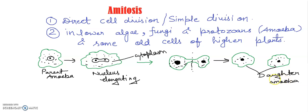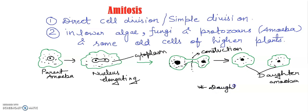So what happens during amitosis: the nucleus simply elongates — this is the process of elongation — and then undergoes a constriction, dividing into two daughter nuclei without any differentiation of chromosomes. Two daughter nuclei are formed.